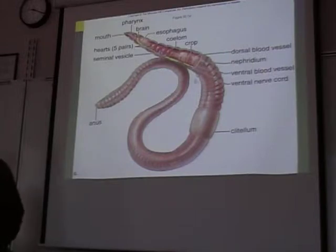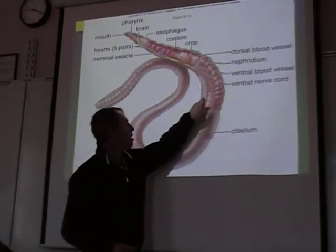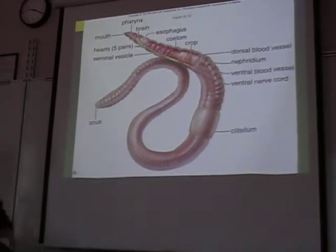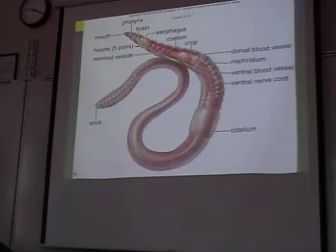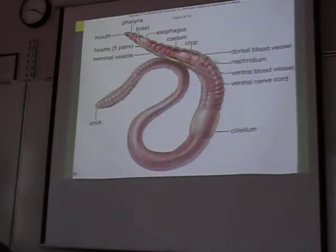They have two blood vessels that run the length of their entire body — a dorsal blood vessel on the top and a ventral blood vessel on the bottom. You can see very clearly how they're segmented, just one segment after another, each segment just like the last. Some interesting parts: they have a pharynx, which is like a throat. The esophagus leads to a storage area called a crop — that's where the dirt is stored temporarily. And then further down, it's got a gizzard.